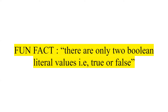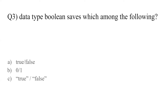Fun fact: there are only two boolean literal values — true or false. Whenever we have to create a variable of type boolean, we can either keep it as true or false. Question number three: data type boolean saves which among the following — option A: true or false, option B: binary values zero or one, option C: true and false in string present in double quotes. The answer is A — whenever we create a boolean data type, we save it in the form of true or false.